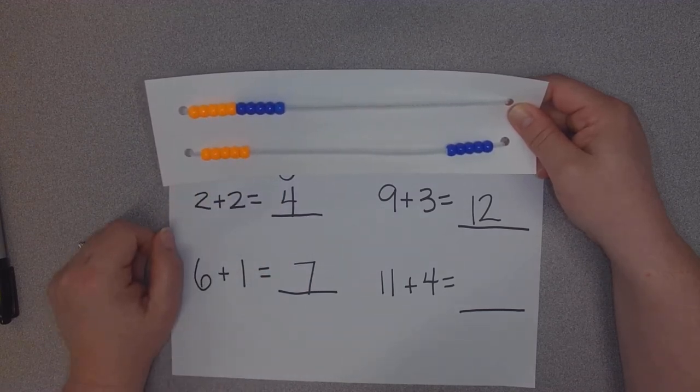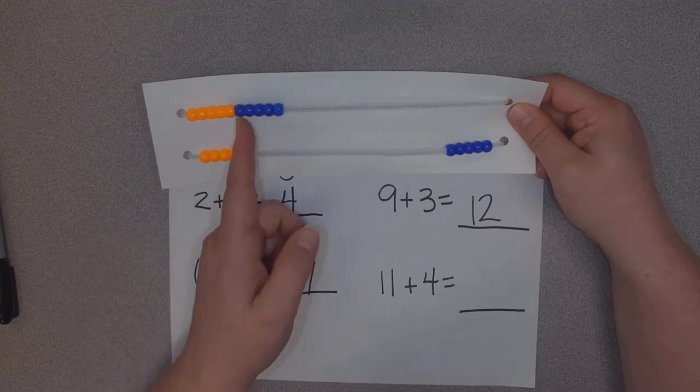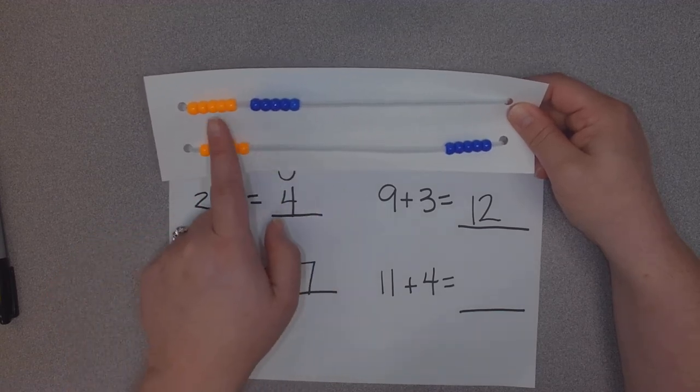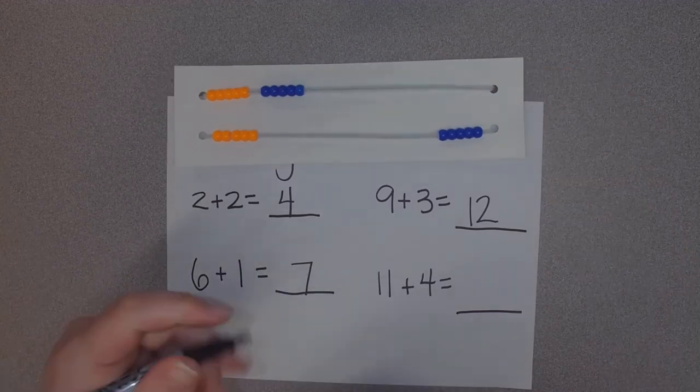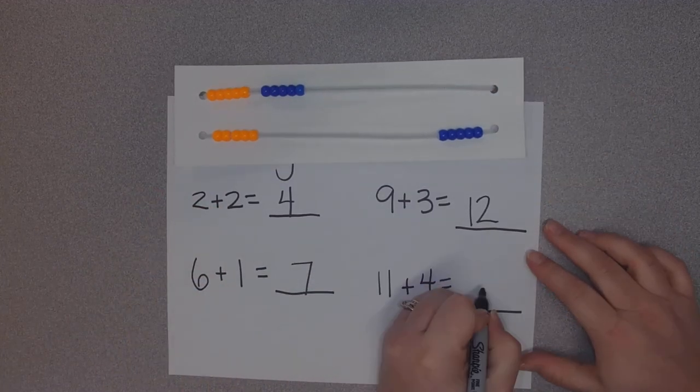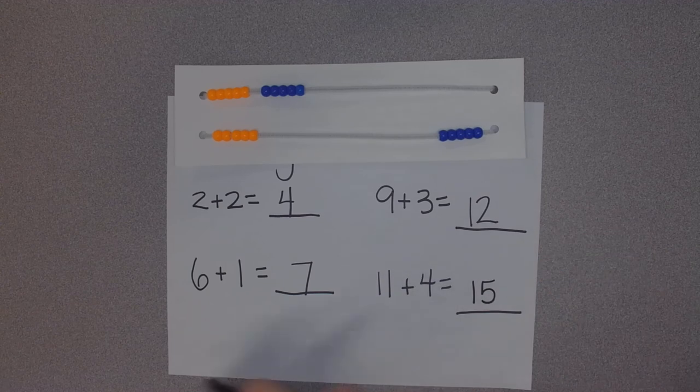Fifteen. You could also count by fives if you wanted. Five, ten, fifteen. That means fifteen is the same as 11+4.